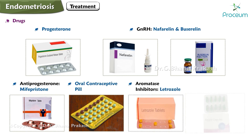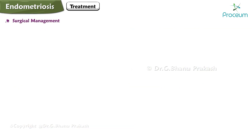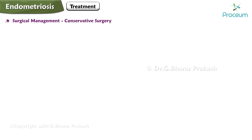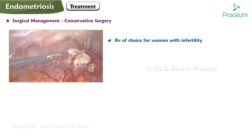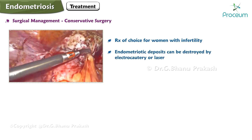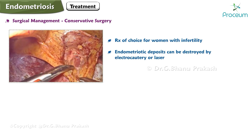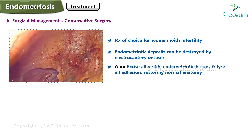Drugs used include progesterone, GnRH analogues (nafarelin and buserelin), antiprogesterone (mifepristone), oral contraceptive pills, aromatase inhibitors (letrozole), and danazol. Surgical management aims primarily at correction of dyspareunia and infertility. The best time to become pregnant in a patient with endometriosis is immediately after surgery. Conservative surgery is the treatment of choice for women with infertility.